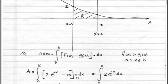When we collect terms, we can see this just becomes the integral from 0 to k of 2 times e to the minus x times dx.